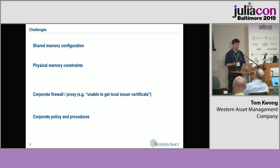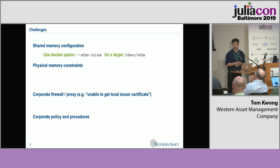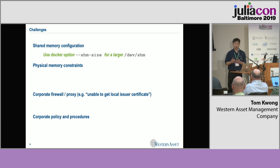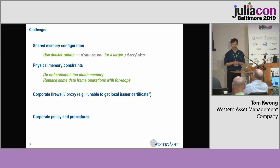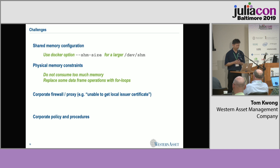You may wonder what challenges we faced in this project. First, since we're using shared memory, we have to make sure we have enough memory allocated in a Docker environment. We have to specify a specific Docker option so that it allocates enough memory to store our valuation matrix data — if you don't do this, Julia will actually crash. We are still dealing with physical memory constraints. In a Docker swarm environment where everyone is using the same environment, we want to be a good citizen and consume as little memory as possible. In some cases, we actually coded some dataframe operations as loops instead.